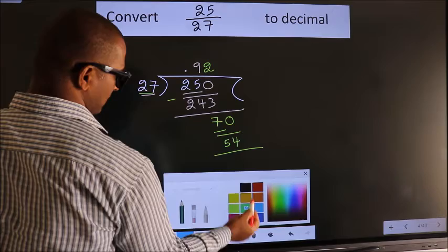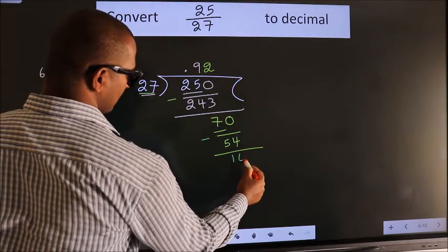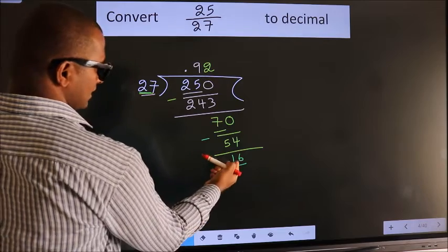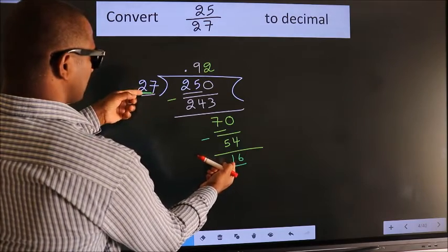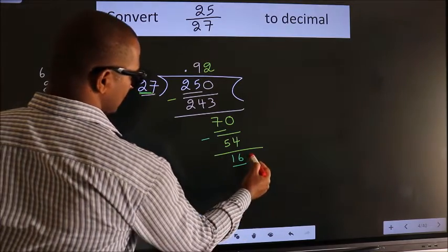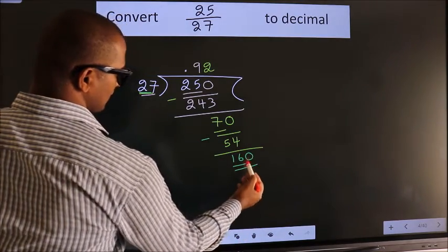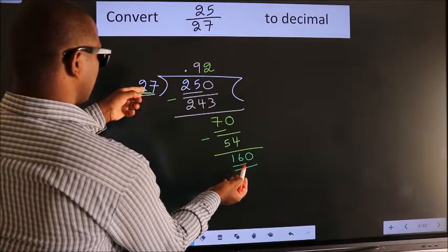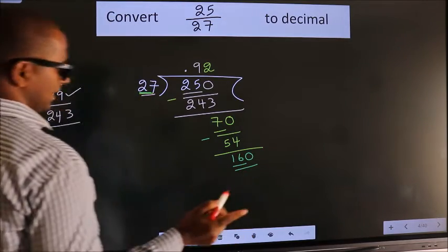Now we subtract. We get 16 here. 16 is smaller than 27. We already have the decimal, so directly take 0. So 160—a number close to 160 in the 27 table.